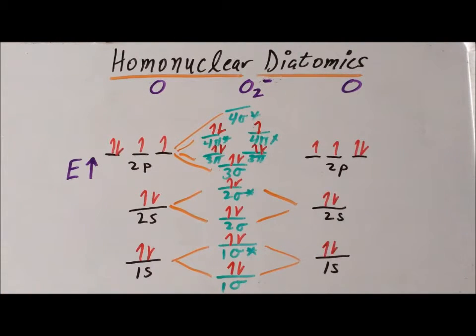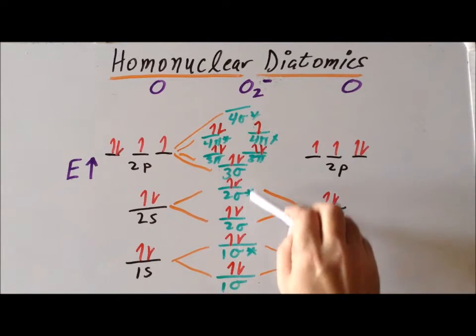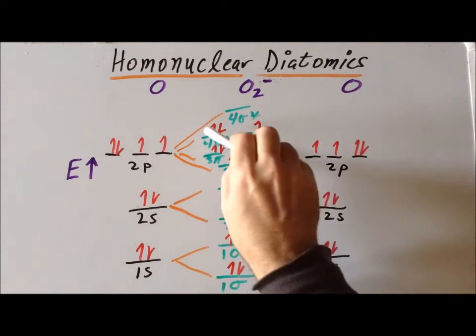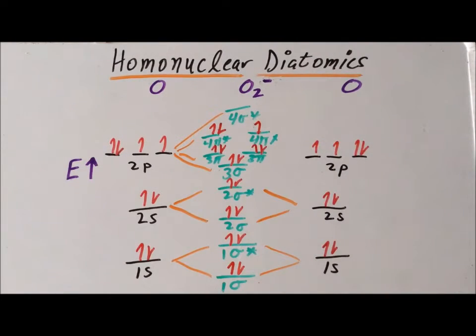With that in mind, let's calculate the bond order for superoxide. How many bonding electrons do we have? Well, we have 2, 4, 6, 8, 10. How many antibonding electrons do we have? We have 2, 4, 6, 7. 10 minus 7 equals 3, divided by 2, gives us a bond order of 1.5. So, we see that if we add an electron to O2, we've reduced the bond order from 2 to 1.5.